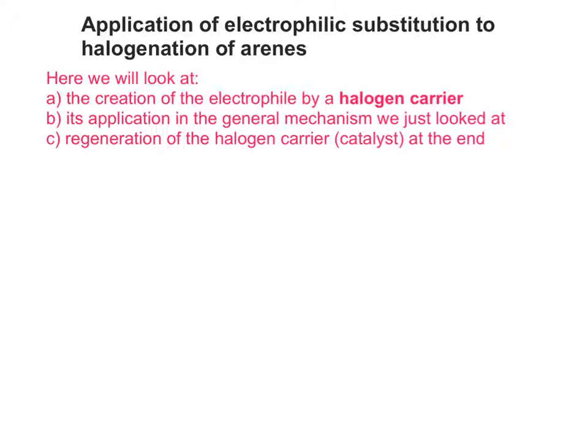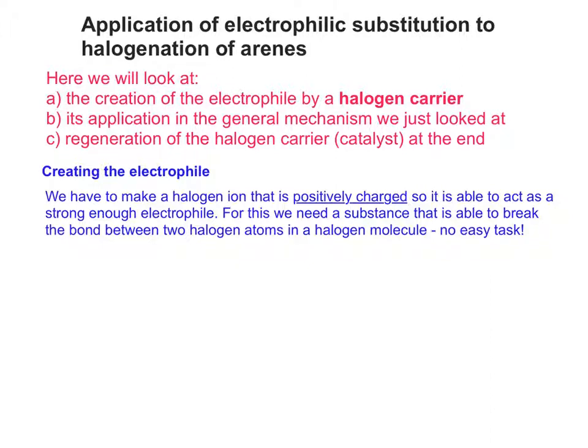We're going to look at creating the electrophile using a halogen carrier, how the electrophile is applied to the general mechanism, and then how we regenerate the catalyst. To make an electrophile that will halogenate an aromatic ring, we have to make a halogen ion that is positively charged. You're used to seeing halogen ions as negatively charged — such as Cl- or Br- — but we need to make Cl+ or Br+, so it will be strong enough as an electrophile to attack the delocalised and stable pi system.